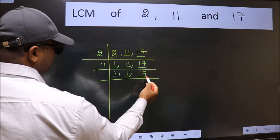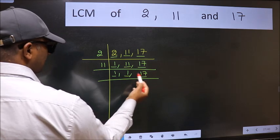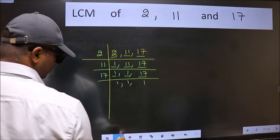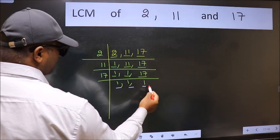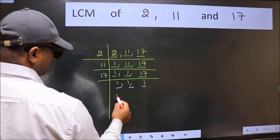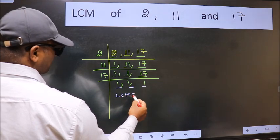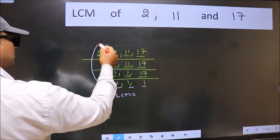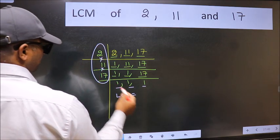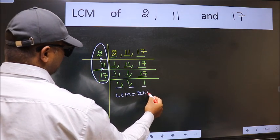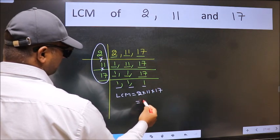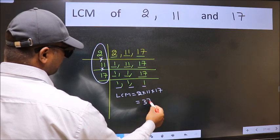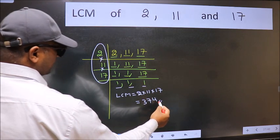Focus on the next number 17. 17 is a prime number, so 17 wants 17. We got 1 in all three places. So our LCM is the product of these numbers, that is 2 into 11 into 17. When we multiply these numbers we get 374 is our LCM.